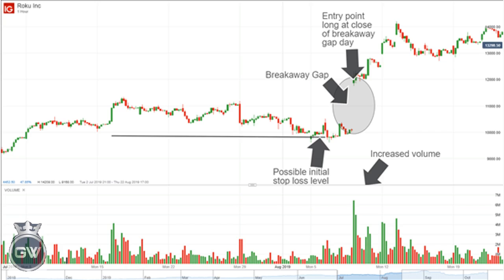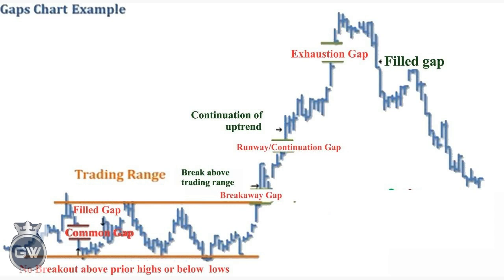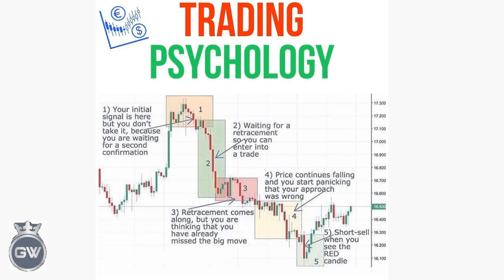Gap trading rules — key things to consider: First, classify the gap you are going to play, as it's important to know which of the four types you've identified. A continuation gap will prolong a trend while an exhaustion gap is set to reverse it — two very different outcomes. When a gap has started filling, it will rarely stop due to there often being no immediate support or resistance. Consider whether a move has been fueled by amateur or professional investors, as amateur irrational exuberance can set up an exhaustion gap. Pay attention to volume — breakaway gaps normally exhibit high volume while exhaustion gaps show low volume. Trading the gap means trading stock market volatility with low liquidity, so caution must be exercised and proper risk management with stop-loss orders is essential.